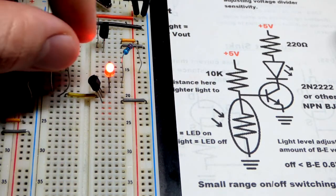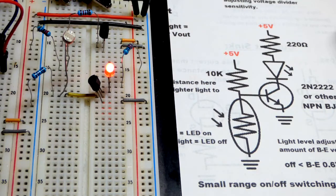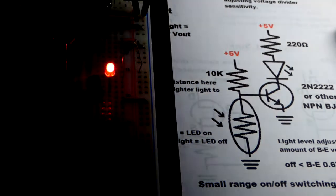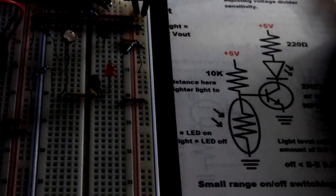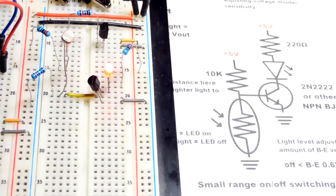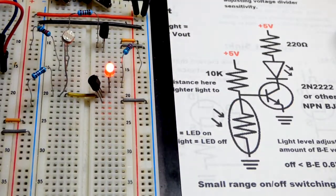So now we have the light on and the LED is on. Let's make it darker. And when we get to that point, then the LED turns off right there. Pretty nice. So we can control this pretty well.